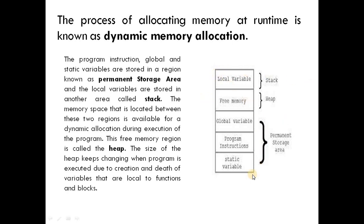So our RAM is divided into such segments: global variables, program instructions, and static variables are stored in the permanent storage area; local variables are stored in the stack; and the remaining part is the free memory known as the heap. During dynamic memory allocation, memory is allocated from this part of RAM.